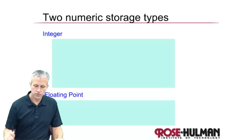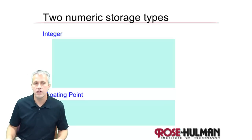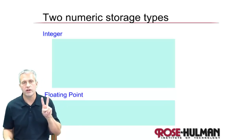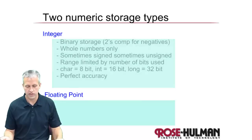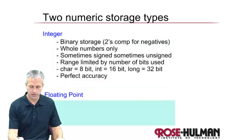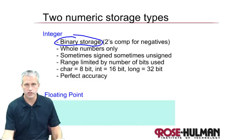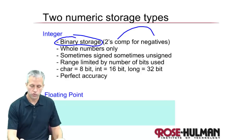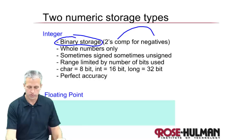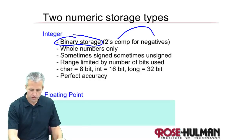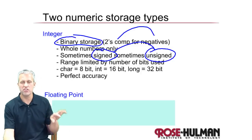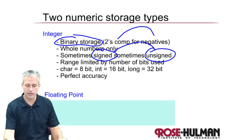When it comes to numeric data, there are two real ways that things are stored. One is as an integer, which you've seen a couple times. This is binary storage using two's complement for the negatives. With integer storage, only whole numbers can be stored. There is also a thing called signed and unsigned integers, which we mentioned last time but not in detail.